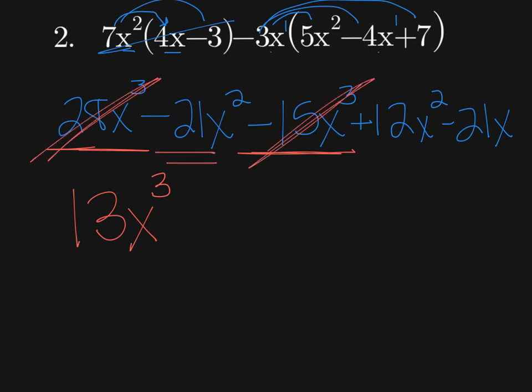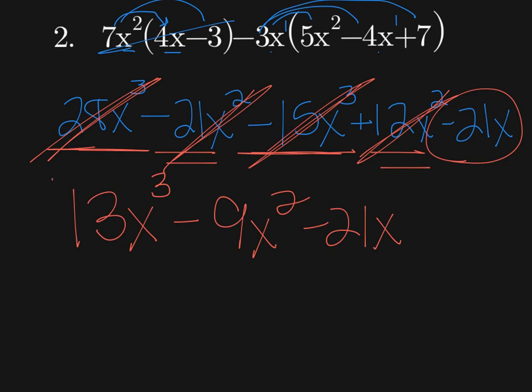Now I have negative 21x squared and 12x squared, which gives me negative 9x squared. And then the last one, I have this negative 21x that doesn't combine with anything. So I bring it down, and that's my answer.